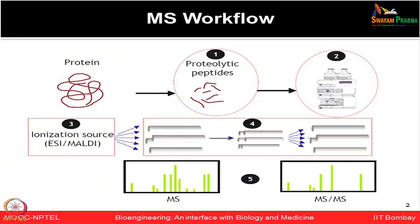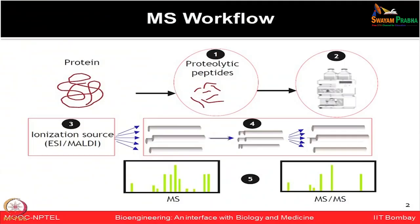In a mass spectrometry-based proteomics workflow, we start with a protein of interest which we want to analyze—either purified or excised from a 2D gel spot or SDS-PAGE band—to determine protein identification. Initially, you have the intact protein which you digest using enzymes like trypsin, chymotrypsin, or Lys-C, thereby generating proteolytic peptides.